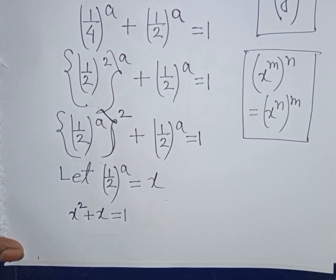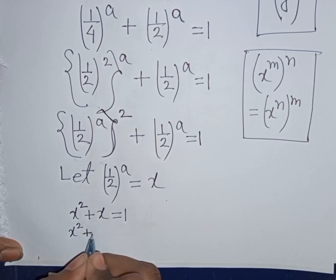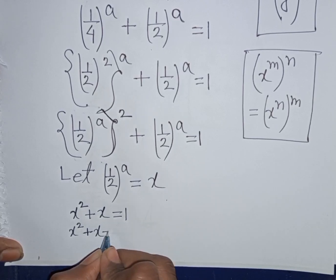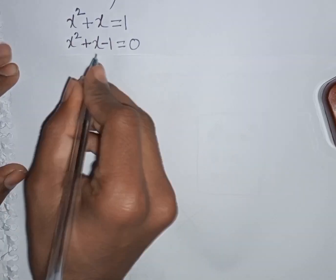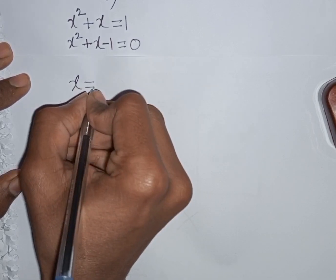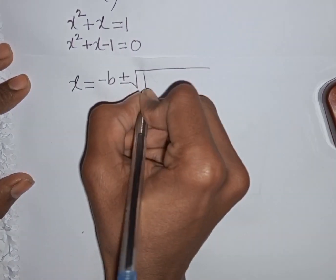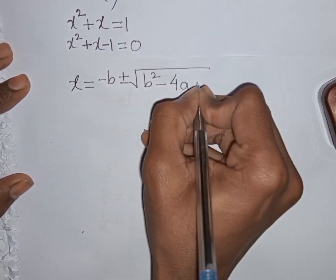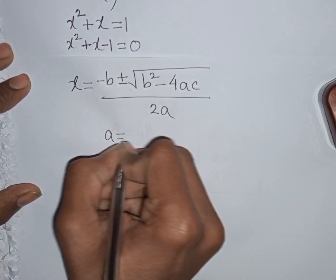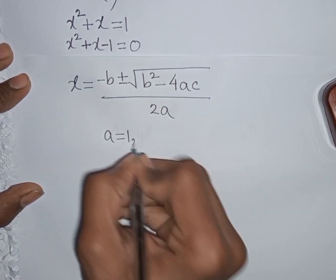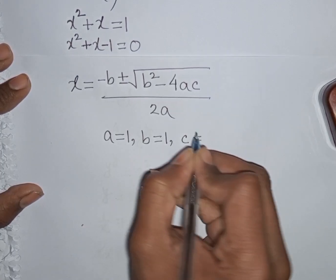Let x = (1/2)^a. Then we have x² + x = 1, and taking 1 to the left side gives us x² + x - 1 = 0. Now we can apply the quadratic formula: x = (-b ± √(b² - 4ac)) / 2a.